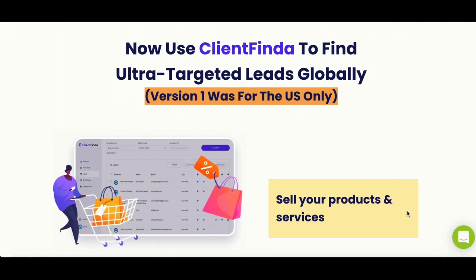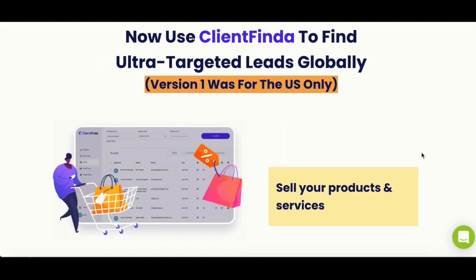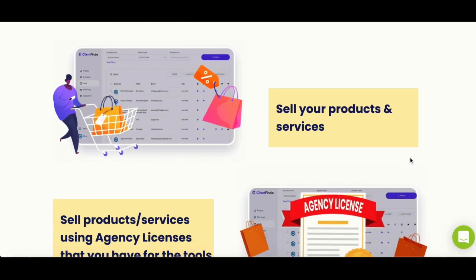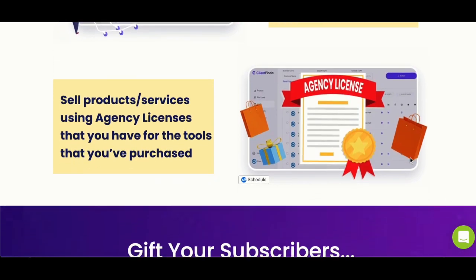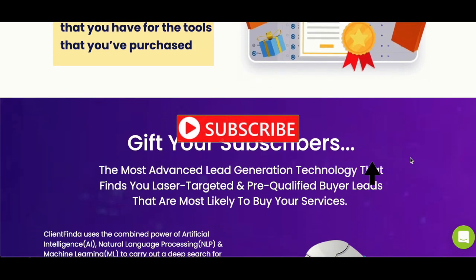Now this is the sales page. I'm going to quickly go through it before we get into the functionality of this software. Now this is a reloaded, upgraded version of the previous one. The first version was for the US only, but now you can find ultra-targeted leads globally. You can sell your own products and services, or sell using agency licenses for tools you've already purchased.